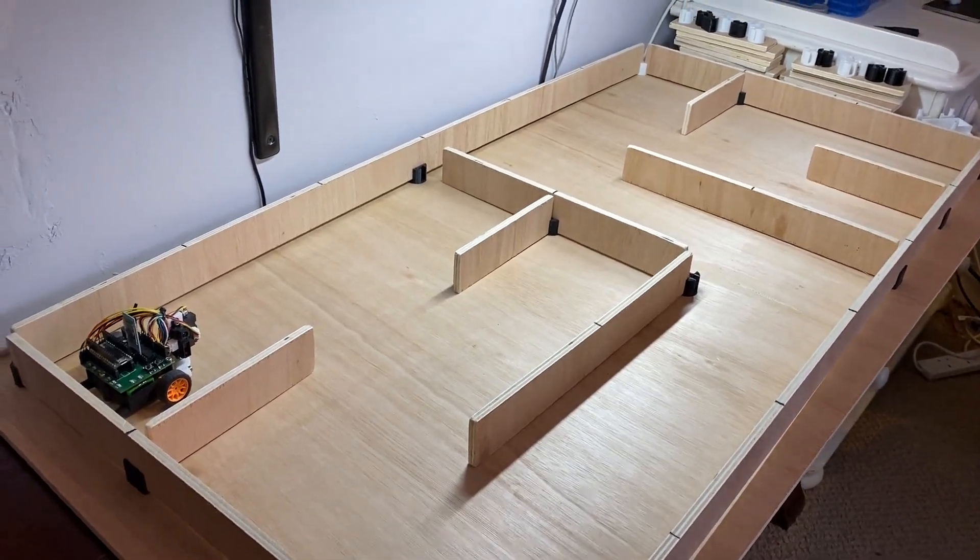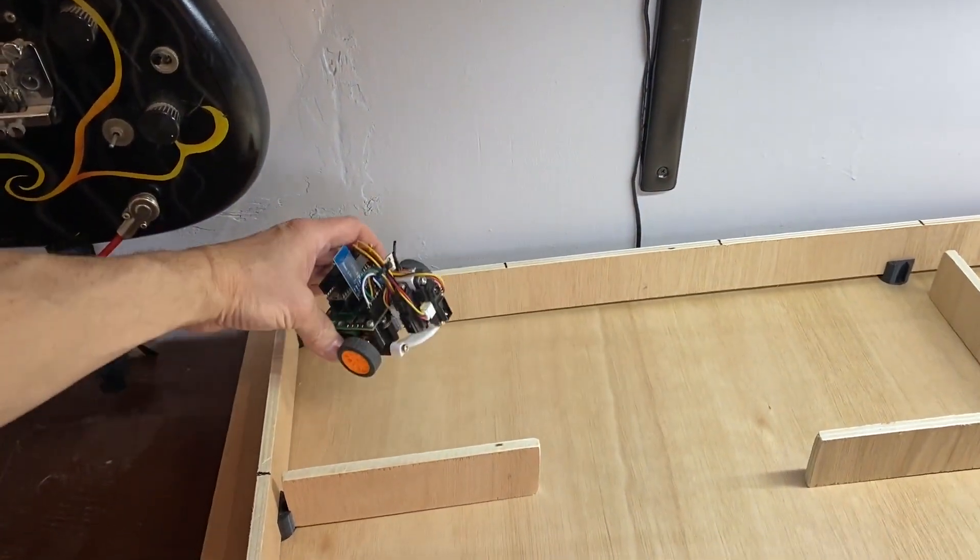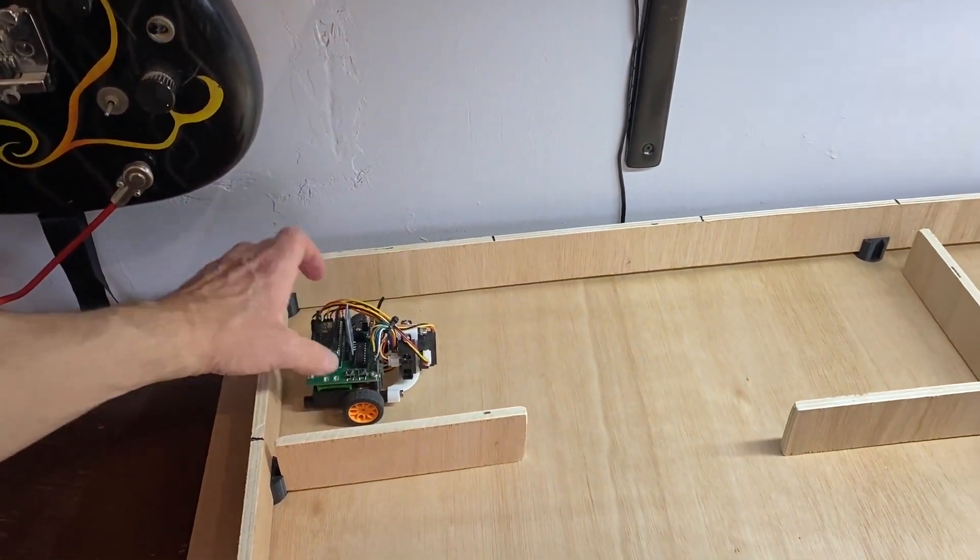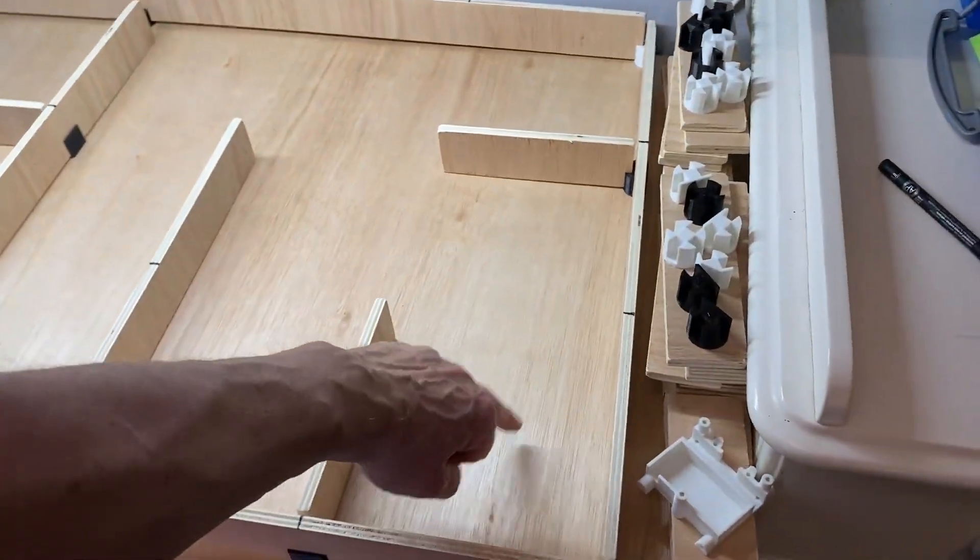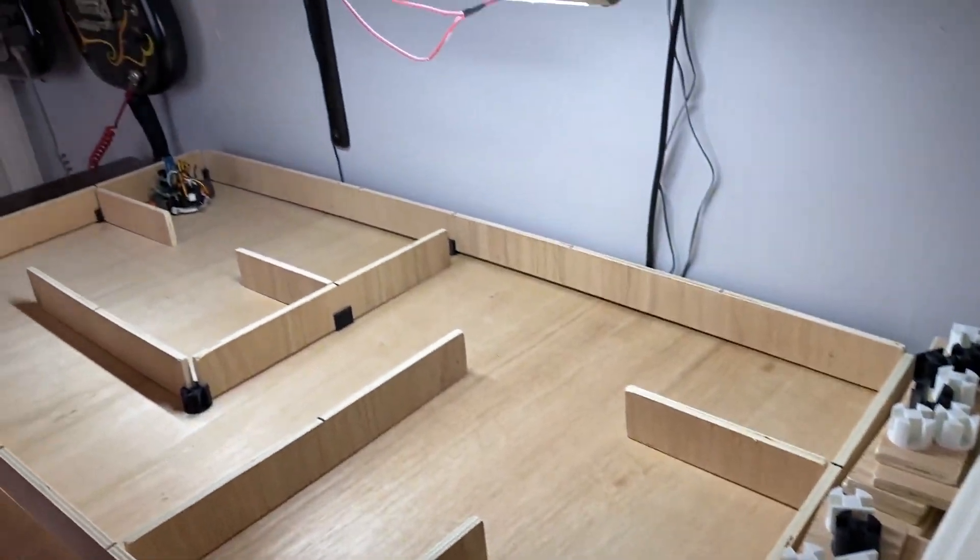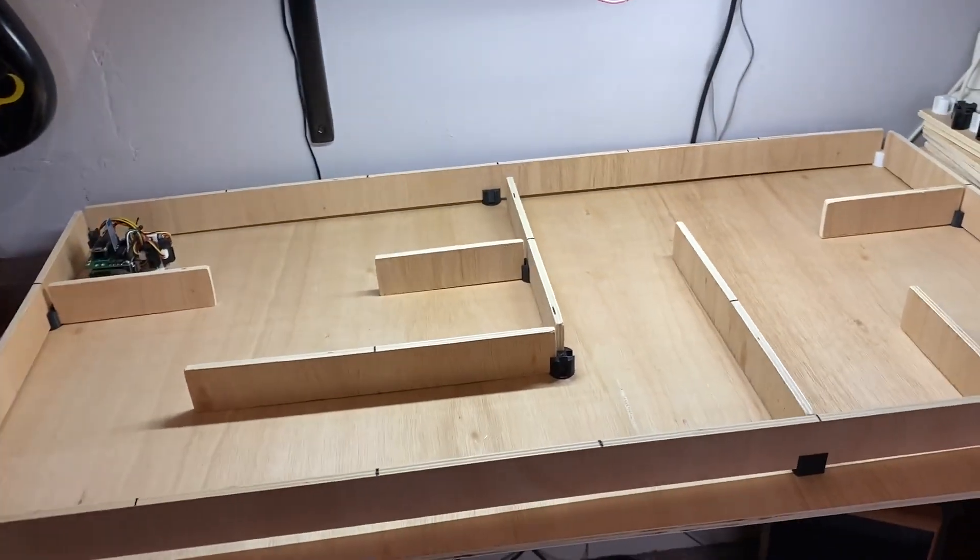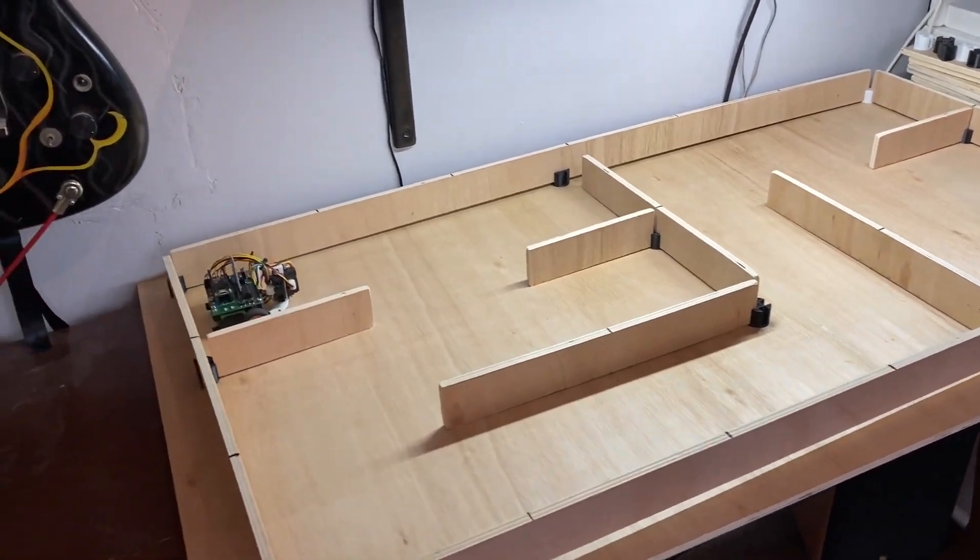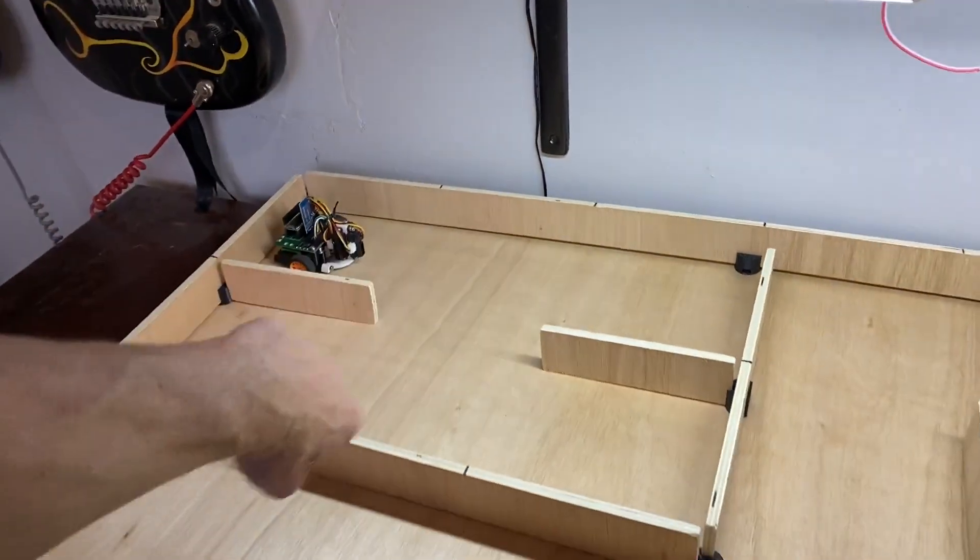This is my micromouse maze and the idea is for my mouse to get from the beginning to the end. It has absolutely no idea where any of the walls are when it starts, so as it goes around the maze it has to detect where the walls are and draw a map.